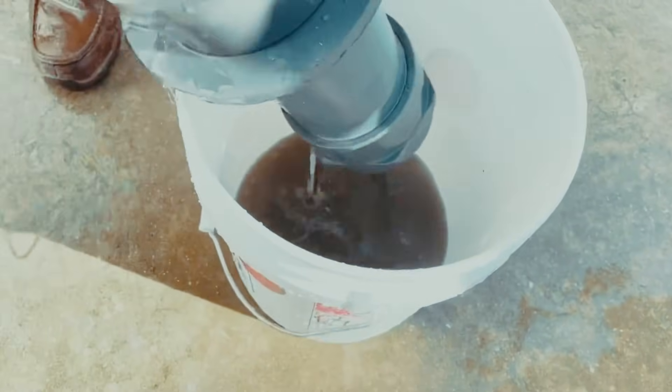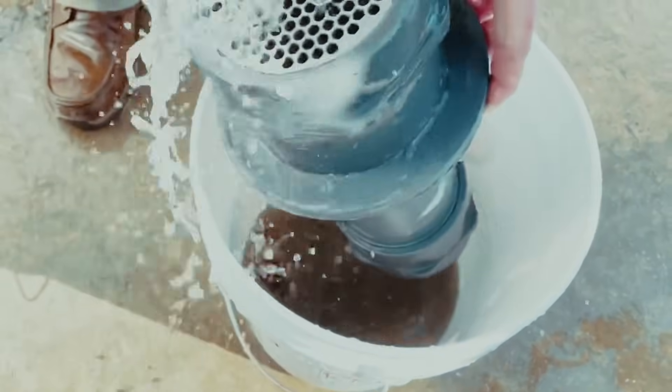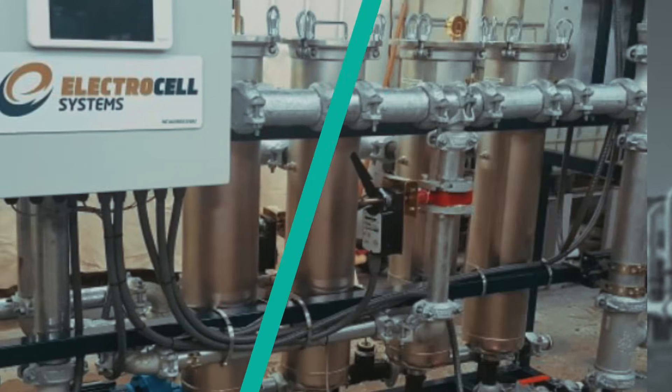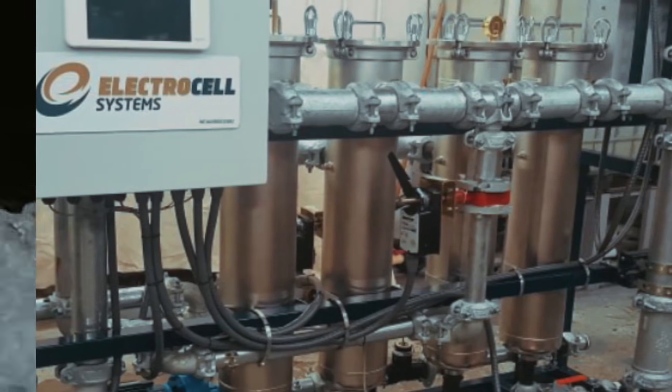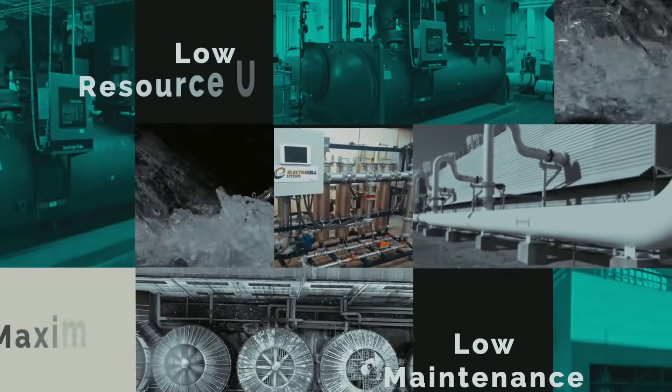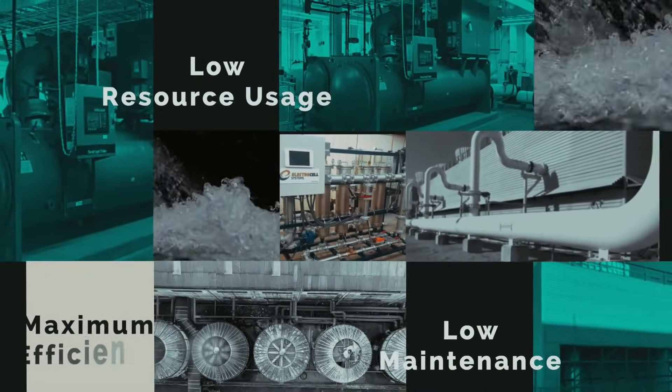This is what Electrocell has removed from the water flow, allowing the unique performance improvement in open-loop chillers and cooling towers. The Electrocell system is the best proactive solution available for achieving maximum efficiency, lower resource usage, and lower maintenance in your cooling tower and chiller operation.